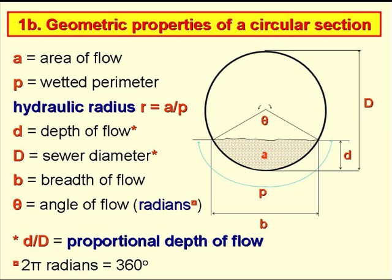a is the area of flow, and p is the wetted perimeter. The ratio a over p is called the hydraulic radius, and is denoted by the letter r. Little d is the depth of wastewater flow in the sewer, and big D is the sewer diameter. The ratio d over D is called the proportional depth of flow. b is the breadth of flow, and theta is the angle of flow measured in radians. There are 2π radians in 360 degrees.